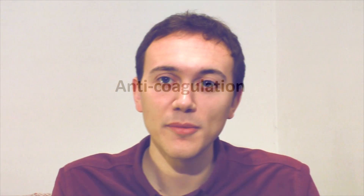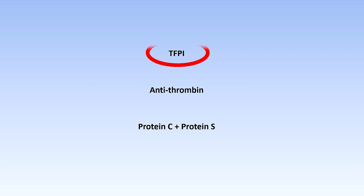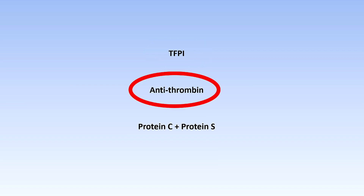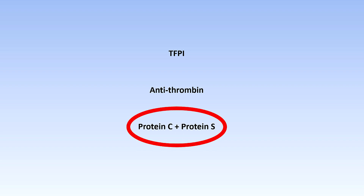This is the third video on clotting. In this video we're going to talk about how your body limits coagulation, how it breaks down blood clots, and also how we can use drugs to manipulate the coagulation system. The most important elements here are the tissue factor pathway inhibitor or TFPI, antithrombin, and proteins C and S.